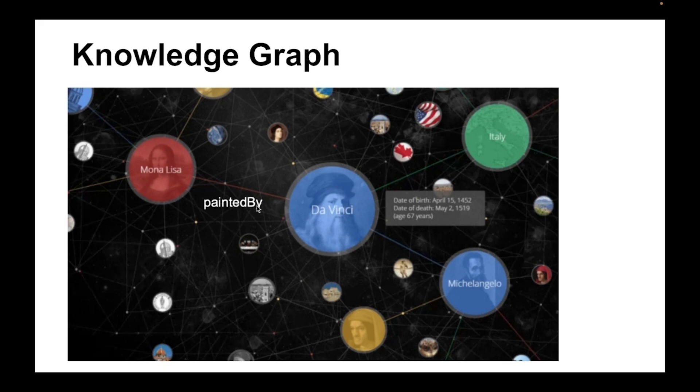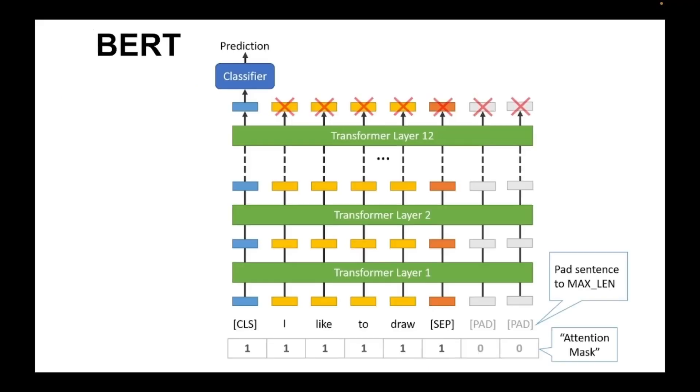Now BERT model, as many of you know, is a transformer-based neural network architecture proposed by Google. In case you're new to transformers and self-attention mechanism, check out the video in the description to understand how that works. So these transformer models take input as a text broken down into sequence of tokens. The output is a sequence of embeddings for each of these tokens.